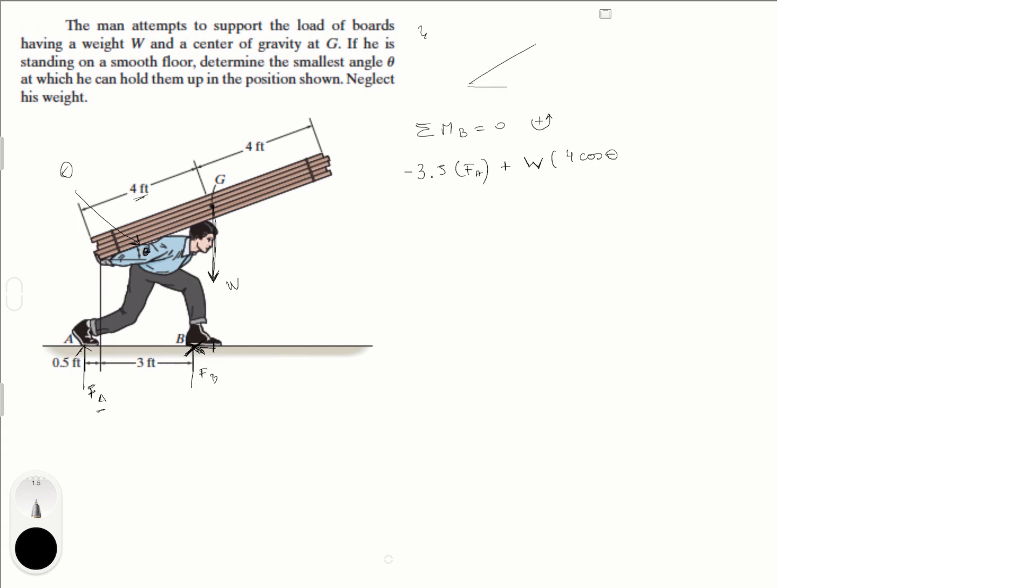So basically we have a triangle right here. And at this tip of this triangle is W, right? This is this, and this is 4 feet, and this is theta.